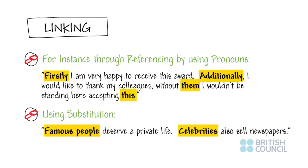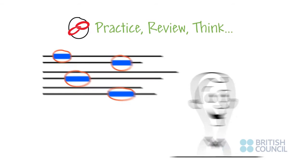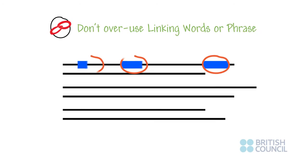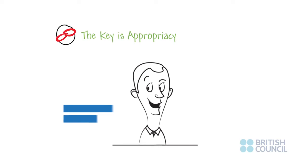As you practice writing essays, review your writing and circle the different linking devices. Then think about how you could use different words to avoid repetition. Don't overuse linking words or phrases, however — this becomes irritating for the reader. The key in using linking words is appropriacy. Ask yourself: is this necessary and does it match the content that follows?